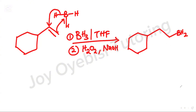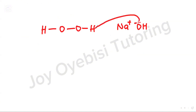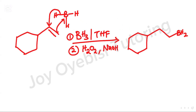The peroxide and sodium hydroxide must react to form the reagent we actually need for the next step. Sodium is positive and OH is negative. The OH negative picks up the hydrogen from the peroxide, that bond breaks, and that gives us HOO with a negative sign on the oxygen. Oxygen has six lone pairs because of the added electron. Now this reagent is used for the next step.